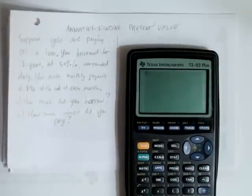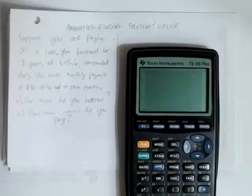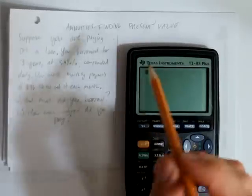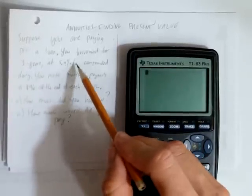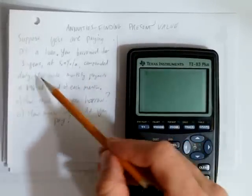This video will describe how to find the present value of an annuity. So suppose you're paying off a loan, and you borrowed for three years at 5.9% interest per annum, it's per year, compounded daily.